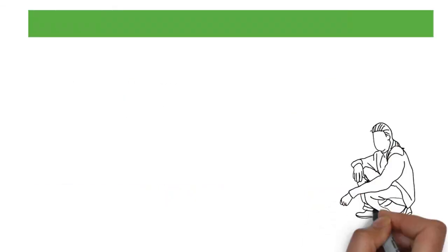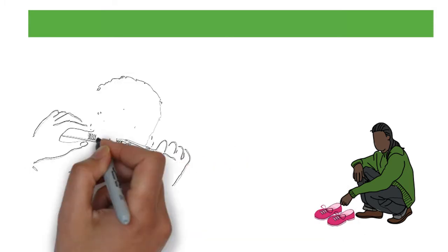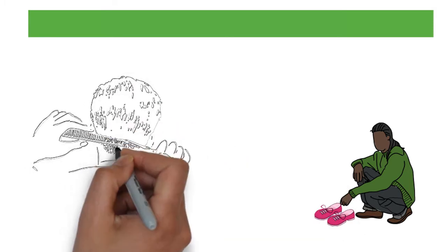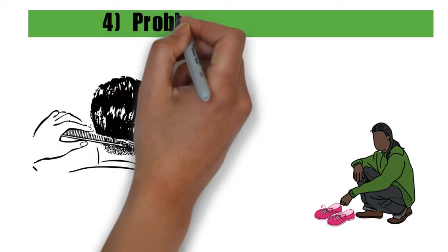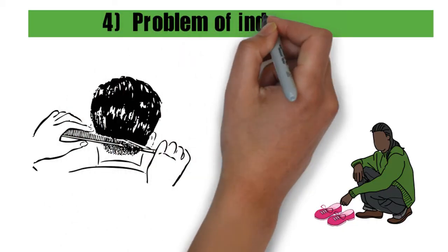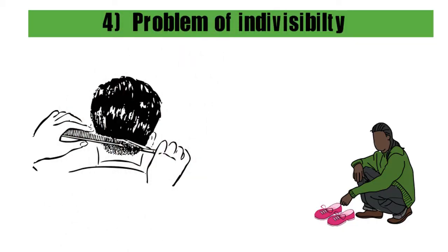In the barter system, you had to buy things as a whole. This means a cobbler's service might not be valued the same by a hairdresser in exchange for his salon services, but he cannot give him a half haircut. Hence, there existed problems of divisibility in the barter system.